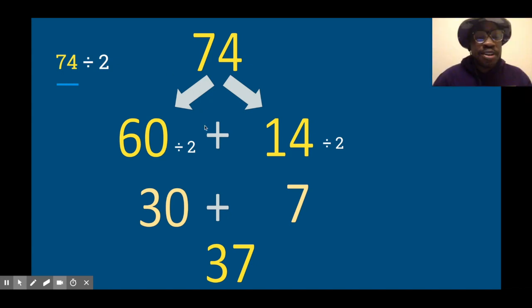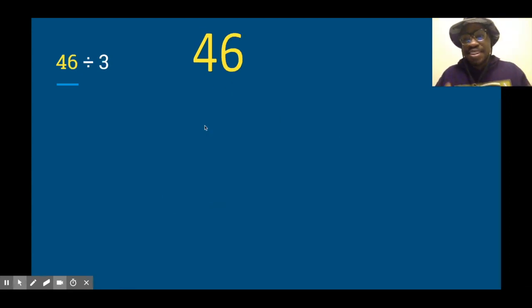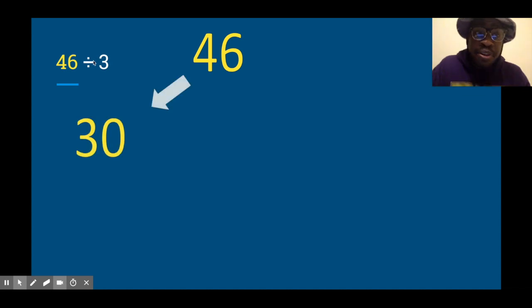Alright, this one's going to be a little bit more challenging. You ready? If you're not ready, pause the video. You didn't pause it? Let's keep going. Alright, 46 divided by 3. Let's do it. Let's decompose 46 into smaller numbers that are still divisible by 3. I'm going to pull out 30 first because I know that's easy to divide by 3—I know 3 times 10 is 30.